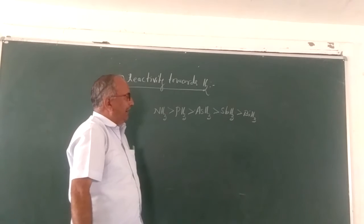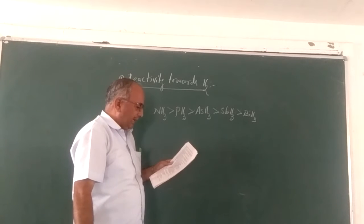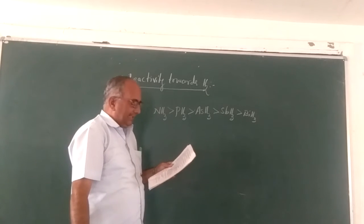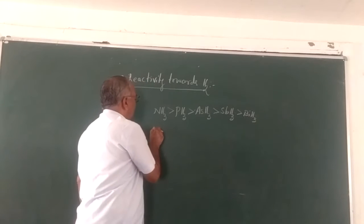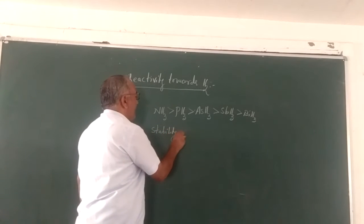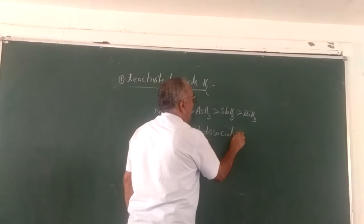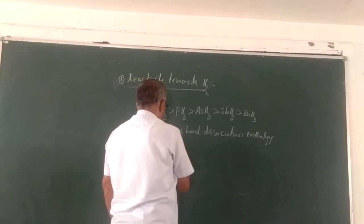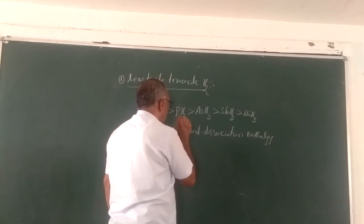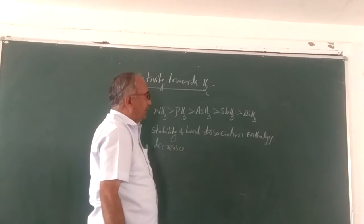All the 15 group elements form hydrides, and the tendency of reactivity decreases from top to bottom. As the tendency decreases, the stability and bond dissociation enthalpy also decrease. This is due to the increase in atomic size.